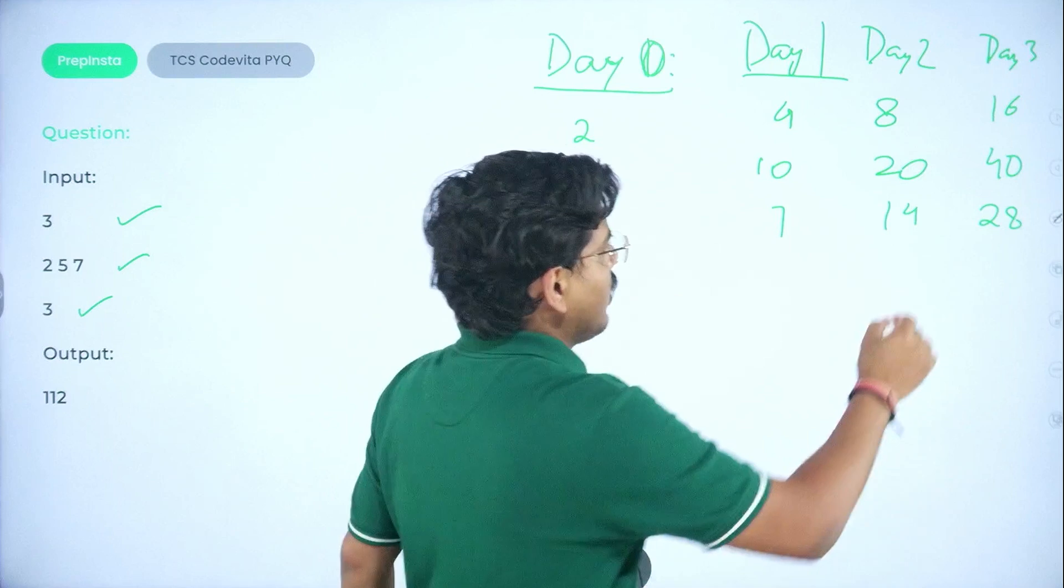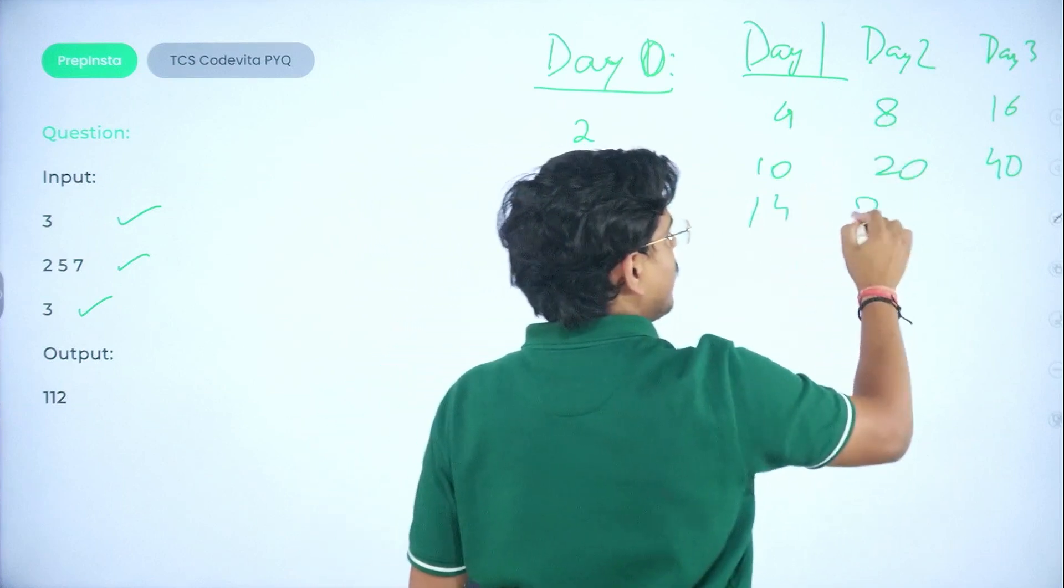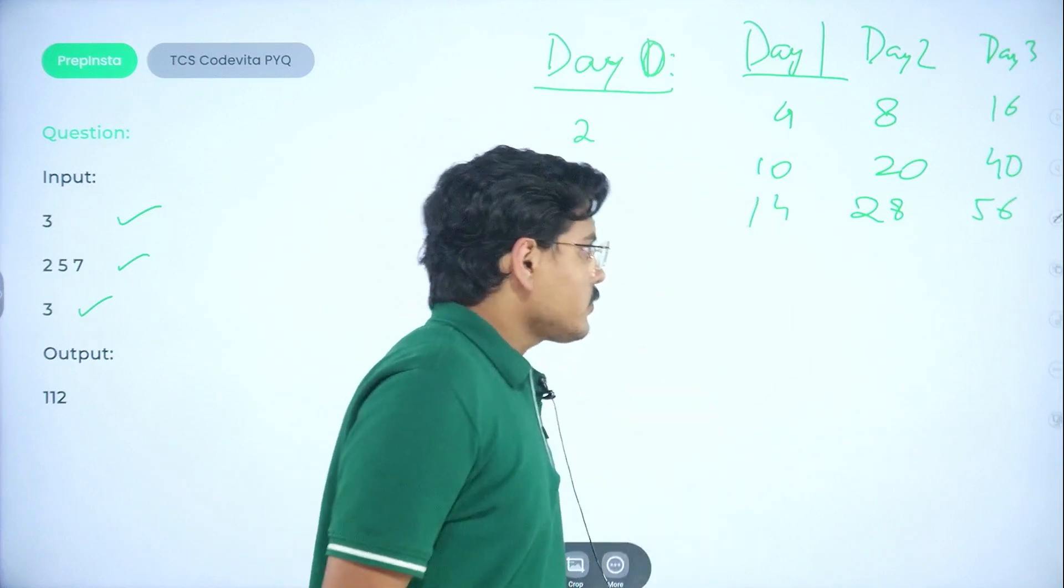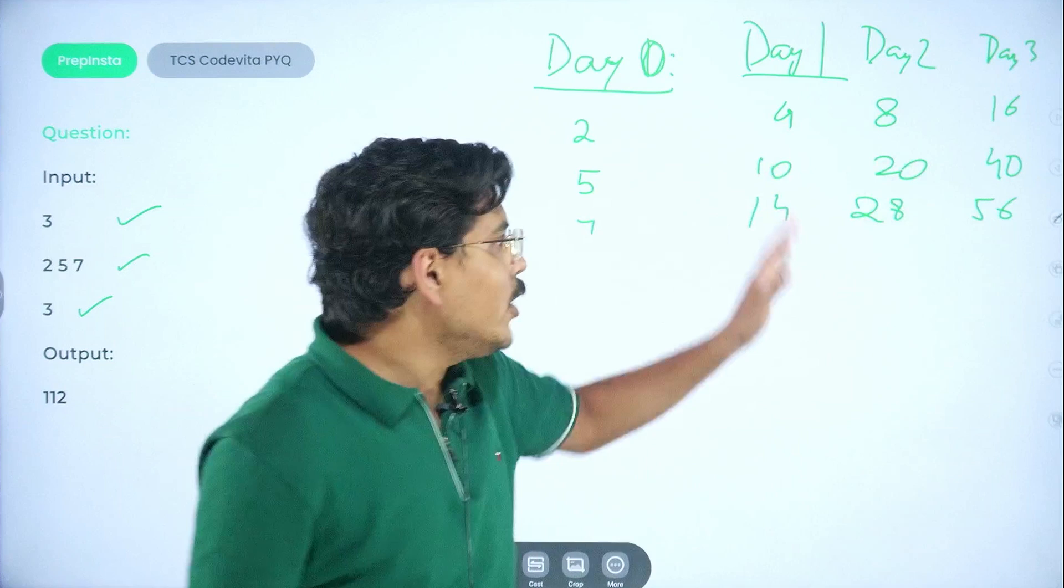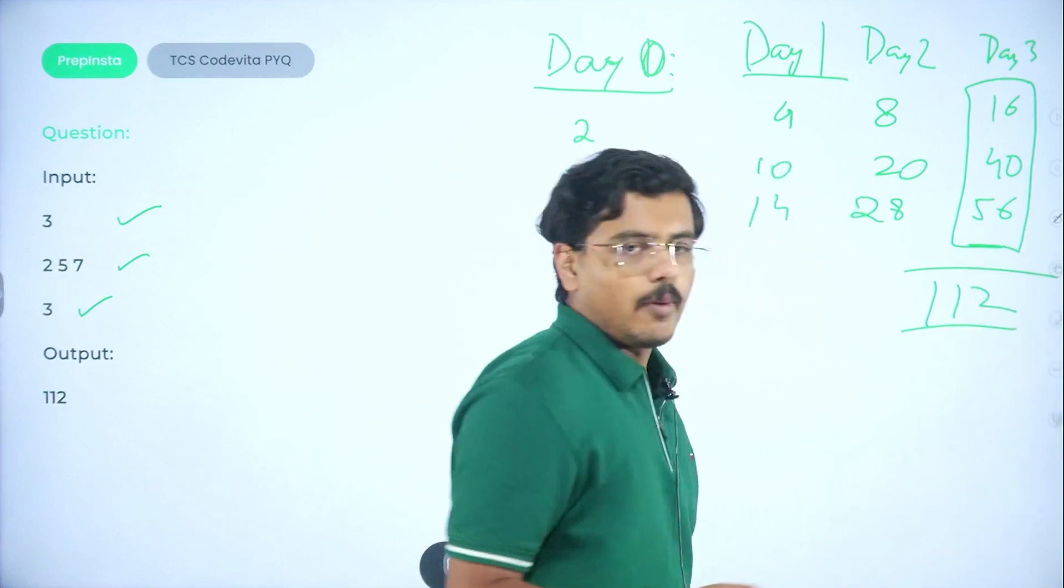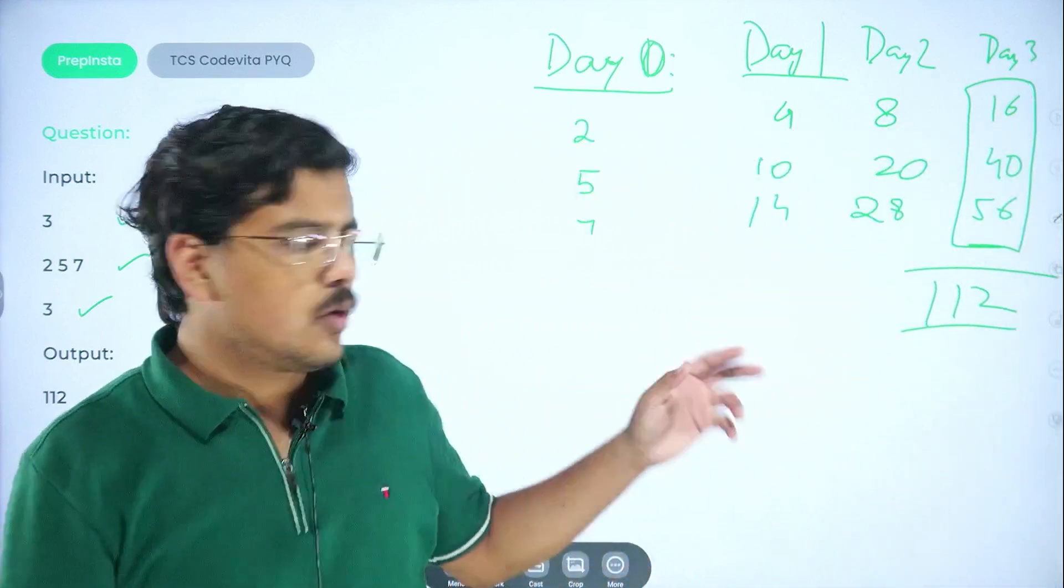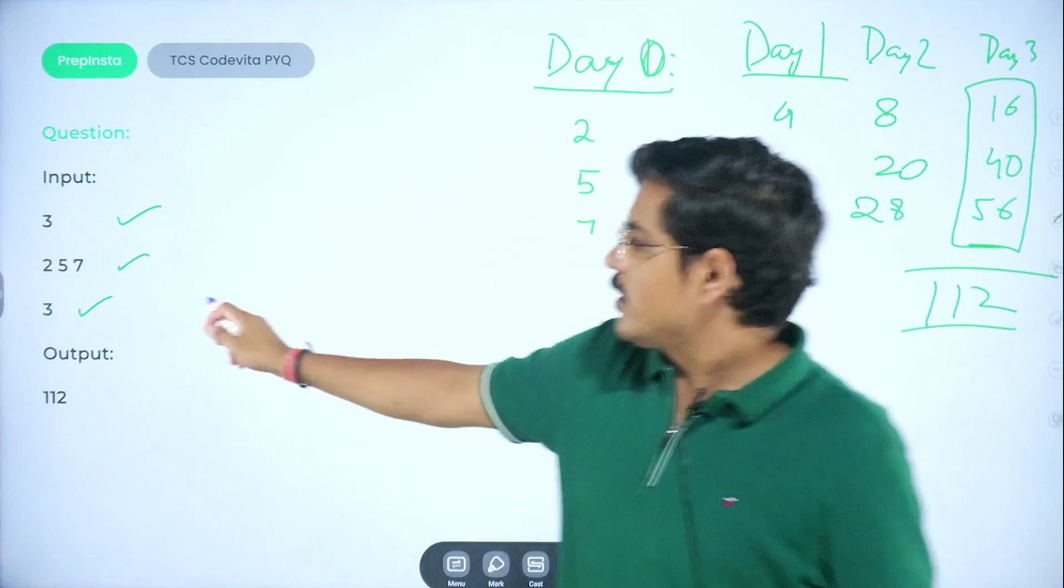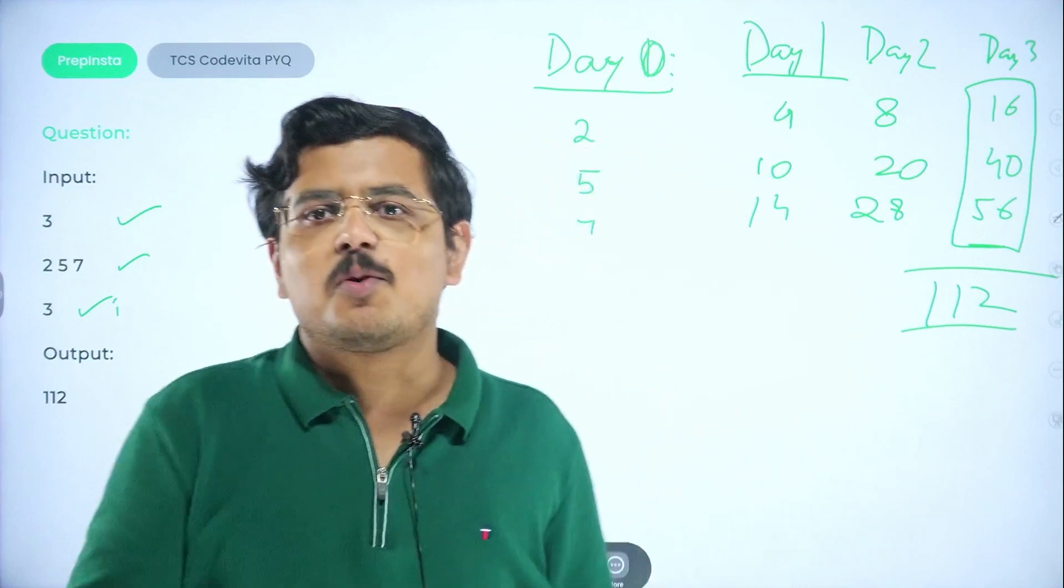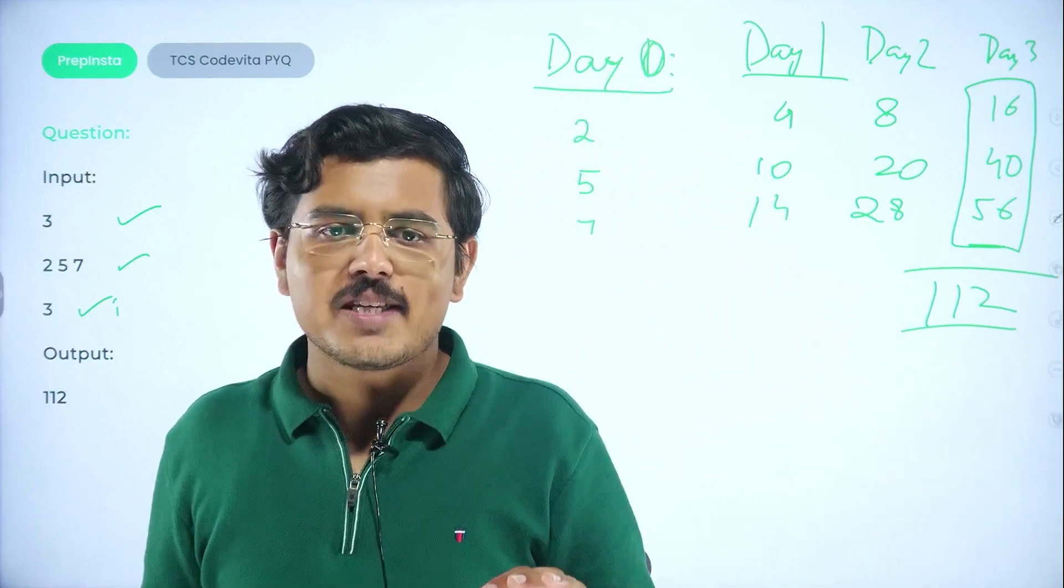Now, understand it carefully. Every day, the flowers were doubling, correct? All you need to do is calculate this particular sum, which is 112. So this output is actually this sum of the day 3 or whatever day x that is being given to you. So we had been given 3 days. We had calculated for day 3. So that's very important. You need to understand the questions approach. All you need to do is double it and then calculate the sum. That's it. A very easy question, but seems difficult.